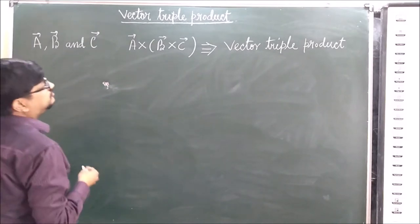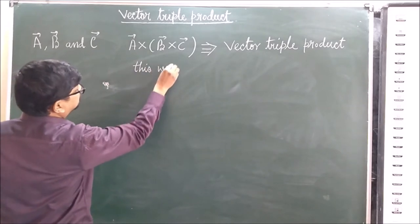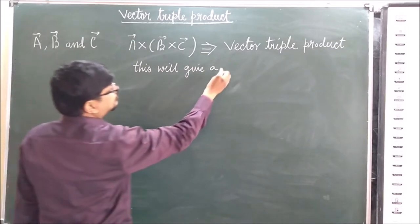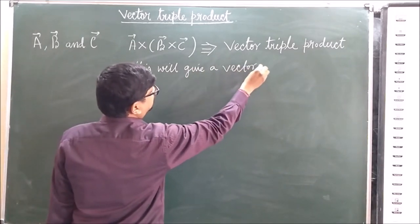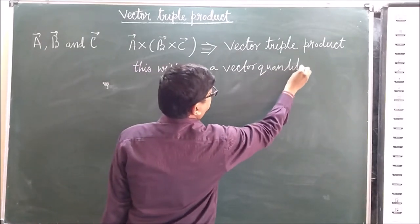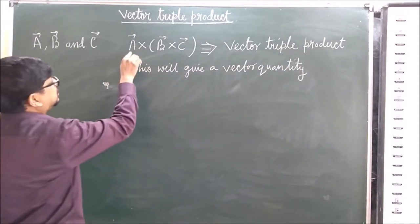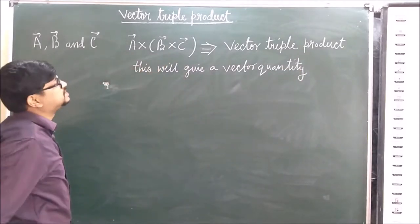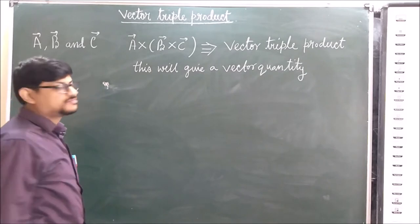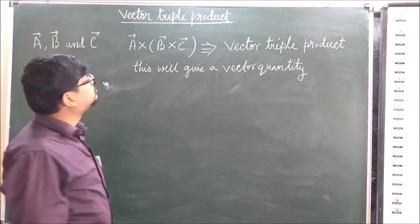The vector triple product will give a vector quantity. We can see that this cross product involves two vectors: B cross C is one vector, and then A crossed with that vector is also a vector quantity.